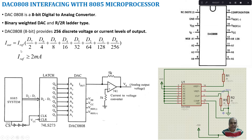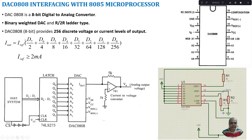Usually the reference current will be greater than or equal to 2 milliamperes. Depending upon the binary content or the 8-bit data, the output current will be generated. We can then use a simple resistor to allow the current to flow through it to calculate the voltage, or use an op-amp based current-to-voltage converter to generate the output voltage.